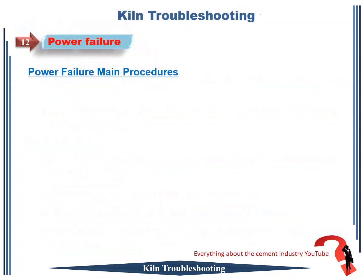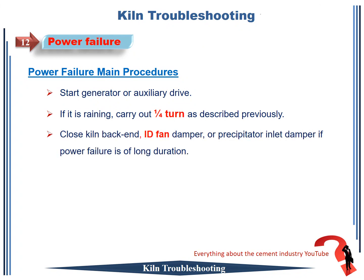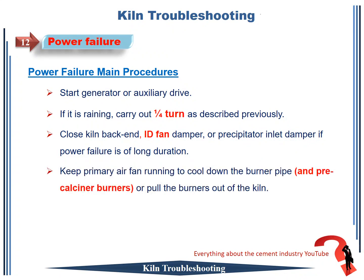Power failure main procedures: 1. Start generator or auxiliary drive. 2. If it is raining, carry out a one-quarter turn as described previously. 3. Close kiln back end ID fan damper or precipitator inlet damper if power failure is of long duration. 4. Keep primary air fan running to cool down the burner pipe and pre-calciner burners, or pull the burners out of the kiln. 5. Try to restore power as soon as possible.